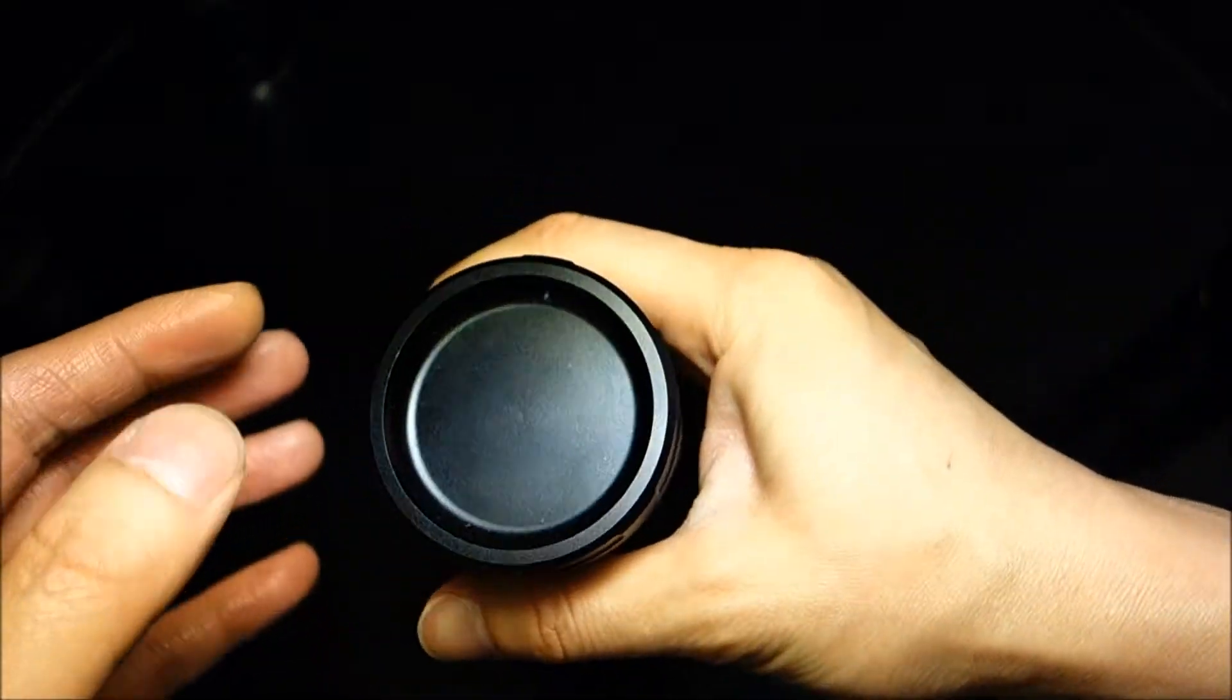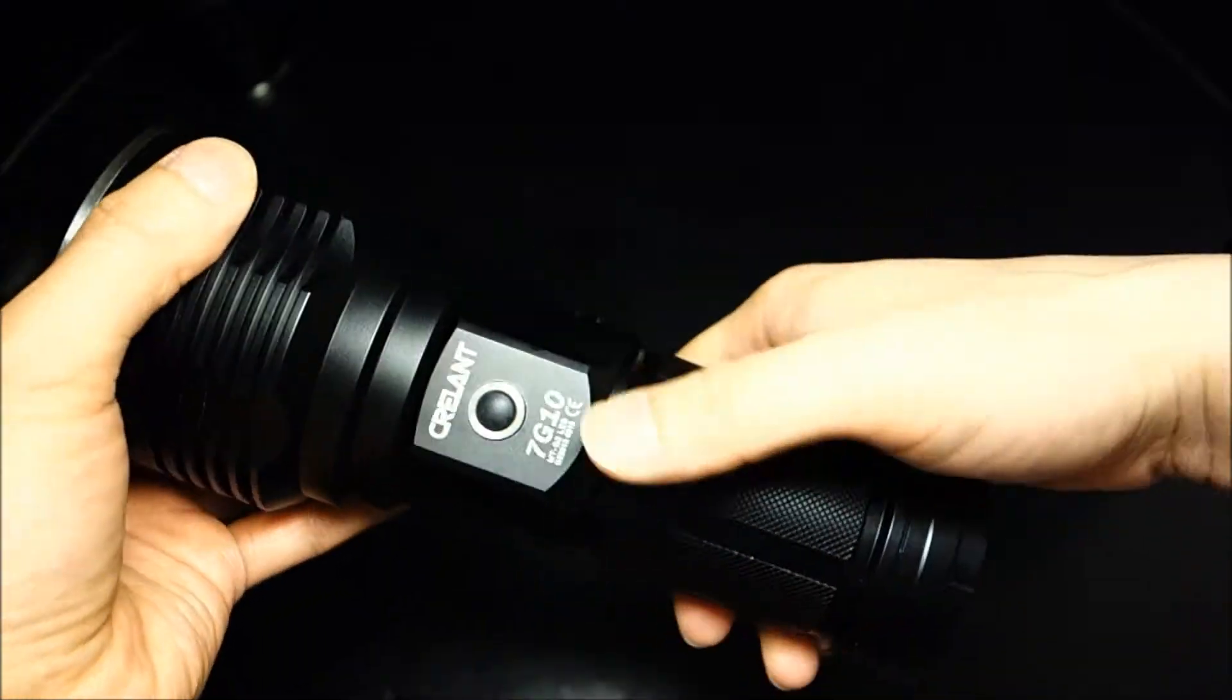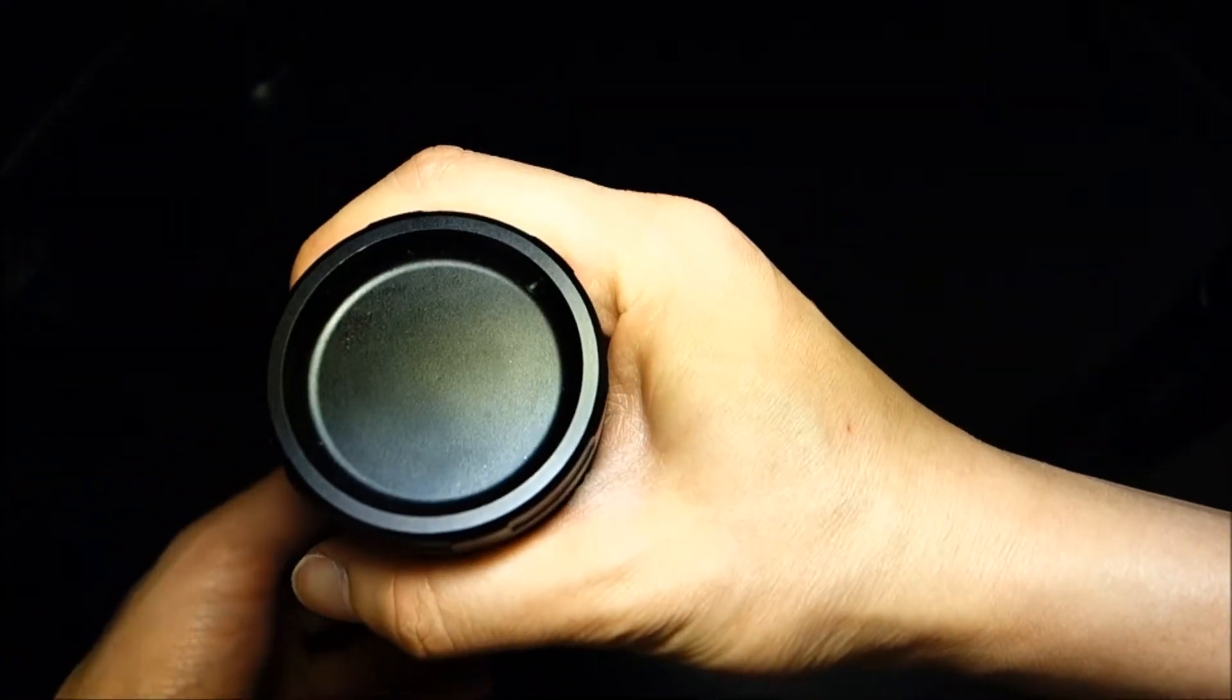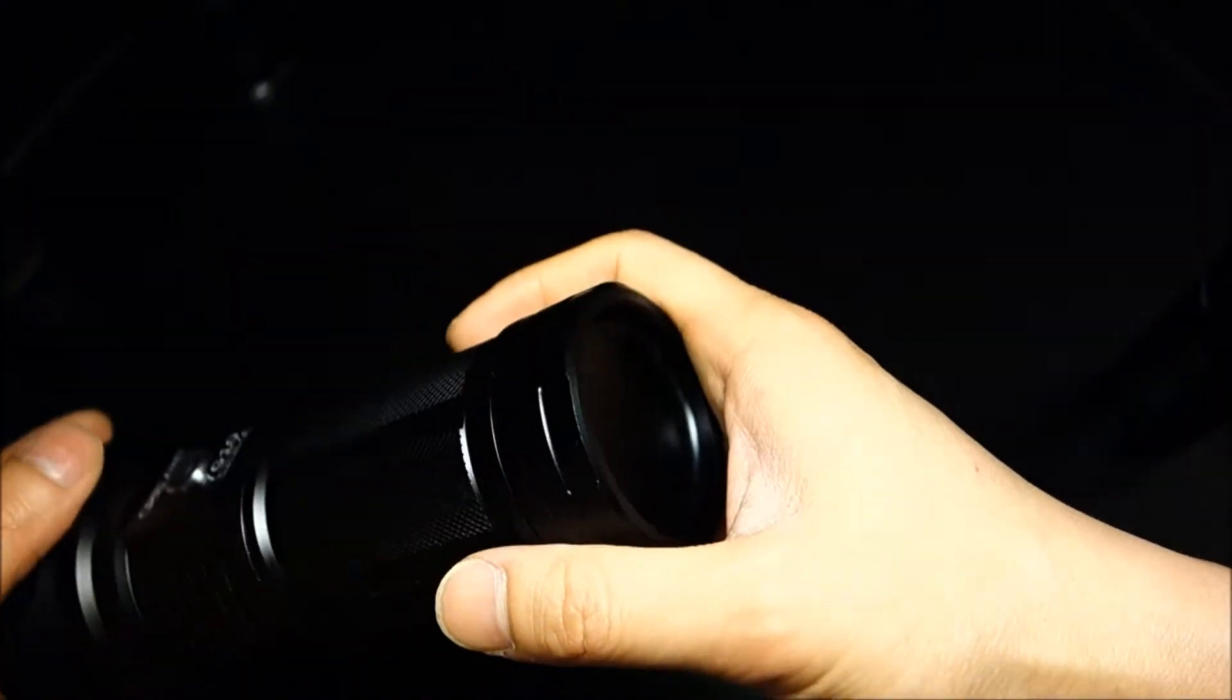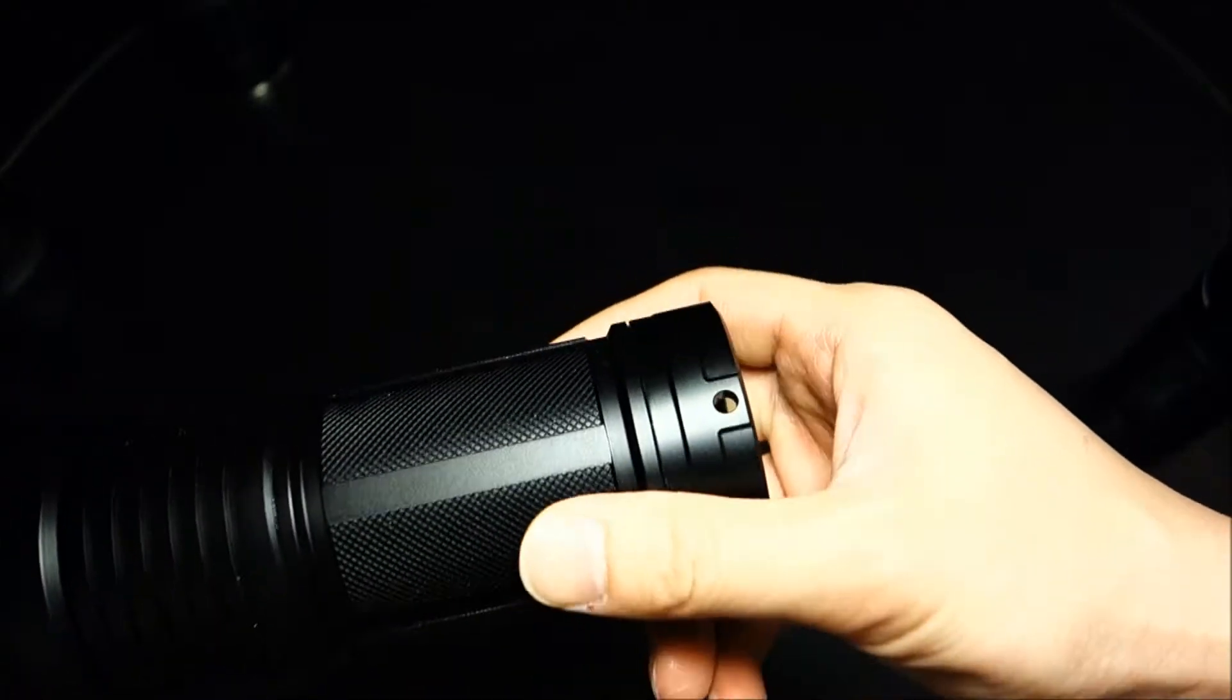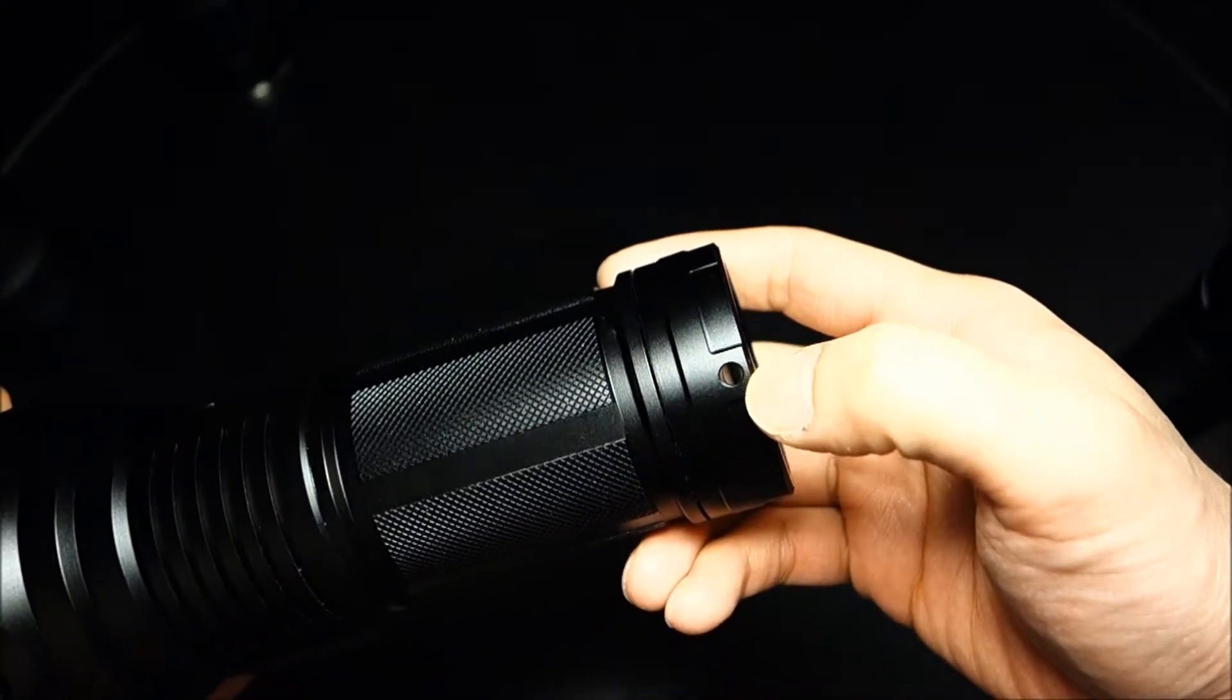Now, rounding out the tail cap, there is no switch, right? Again, all the controls are solely through that side switch there. And it is perfectly flat, so it allows decent tail standing. And there is one mount for the lanyard here.